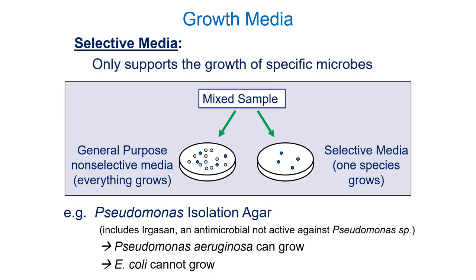Selective media only supports the growth of very specific microbes — quite often containing compounds poisonous to everything except the microbe you're interested in. If you're presented with a mixed culture and want to pick out one species, you might use selective media that will kill off everything except the bacterium you're interested in. In this example, Pseudomonas isolation agar contains a compound called ergosan — an antimicrobial that kills most microbes but doesn't limit Pseudomonas growth.